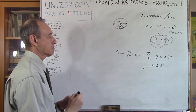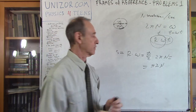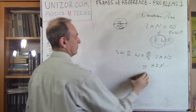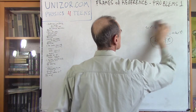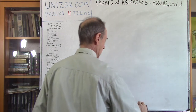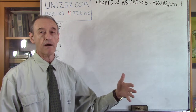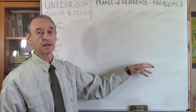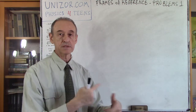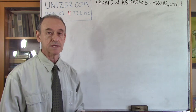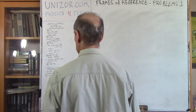So that's the answer: the linear speed of the car is πDN, where N is revolutions per second and D is the diameter of the wheel. By the way, the speedometer device in a car may actually calculate speed exactly using this formula, since it knows the diameter of the tires and can count how many revolutions per second the wheel makes.